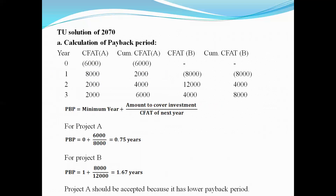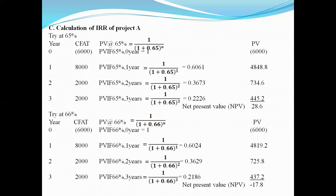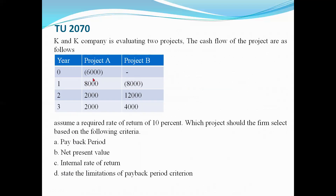In step 2 we will try interpolation, and in step 3 we will do interpolation. The NCO is 6,000. The average annual CFAT is 8,000 plus 2,000 plus 2,000 equals 12,000 divided by 3 equals 4,000. NCO 6,000 divided by CFAT 4,000 gives a fake factor of 1.500. In the PVIFA table, we look up 1.500.